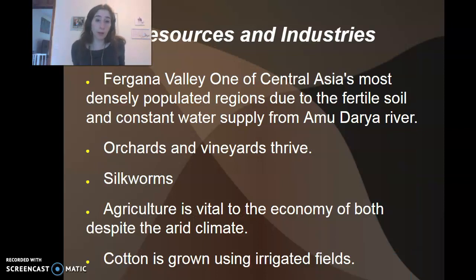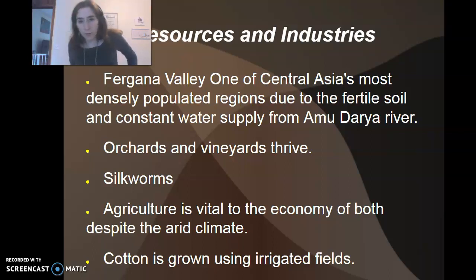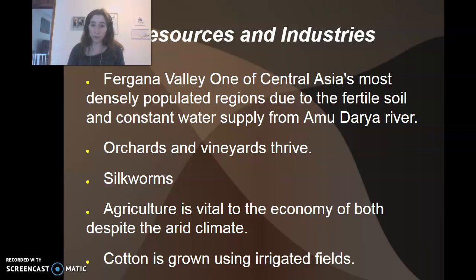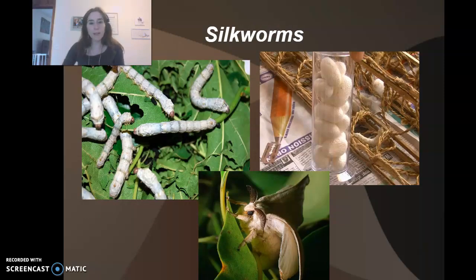The Fergana Valley used to be one of Central Asia's most densely populated regions due to fertile soil and a constant water supply from the Amu Darya River. The orchards and vineyards there thrive. They also have a very good silkworm industry, and agriculture is vital to the economy of both countries. Despite the arid climate, cotton is also grown there.